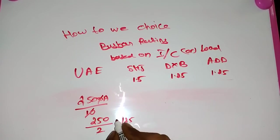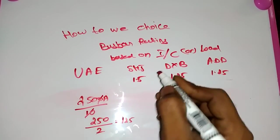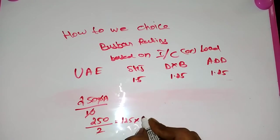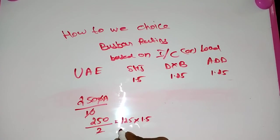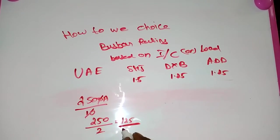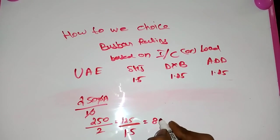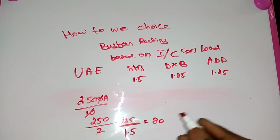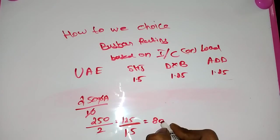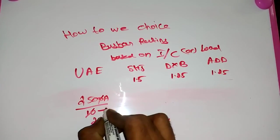We have 125. Suppose we design for Sharjah, divide by 1.5. Now we got 80, that means we got the answer 80.